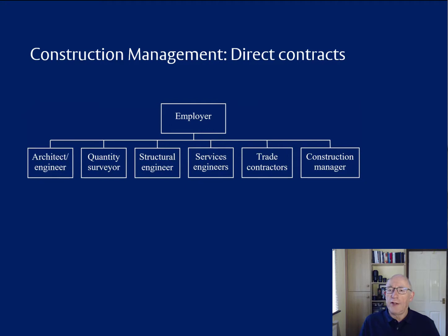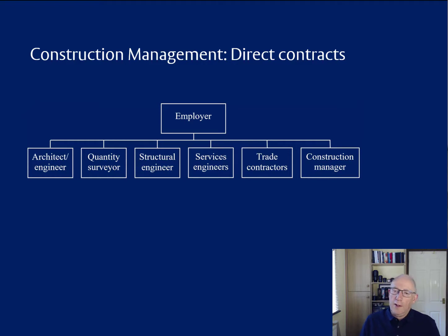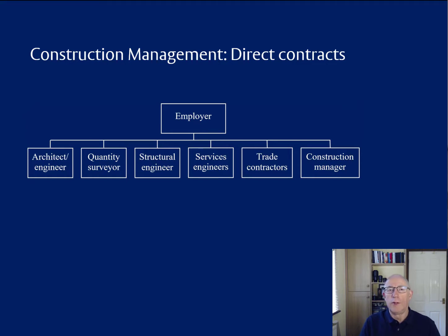The third method is construction management: direct contracts between the employer and the trade contractors, with a consultant construction manager coordinating the work of the trade contractors. Contractually, the construction manager has no liability for the work on site — that lies between the trade contractors and the employer. In effect, the employer steps into the general contractor's shoes by taking on liability for the interfaces between trade contractors, and employs a construction manager to act on their behalf in discharging that liability.